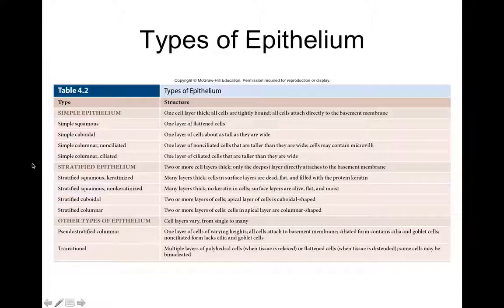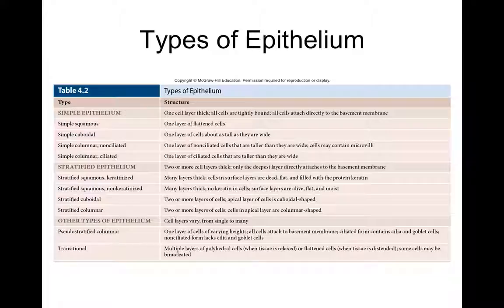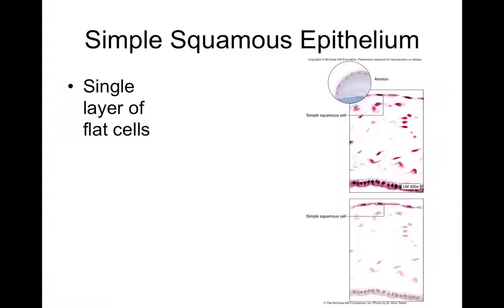These tissue types are defined by their names. For example, stratified columnar epithelium has two or more cell layers with columnar-shaped cells at the apical surface, not the basal surface. If the cells were columnar at the basal surface but cuboidal at the apical surface, it would be called stratified cuboidal — because tissues are named for the shape of cells at the apical surface.